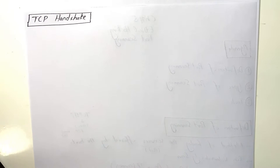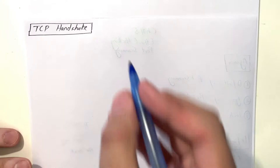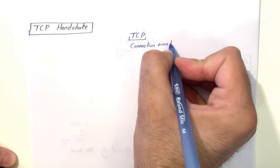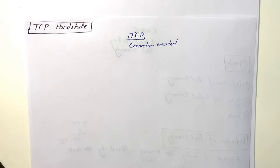To understand the different types of port scanning, we need a good understanding of TCP handshaking. TCP protocol is connection-oriented, meaning it establishes a connection first before bi-directional communication begins.